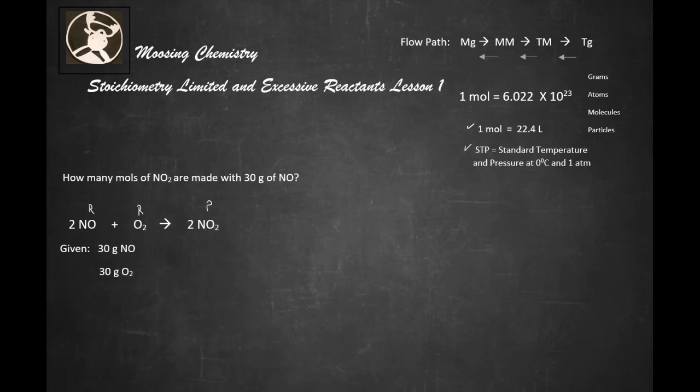We first have to determine which is the limiting reactant, and once we've determined that, we can base our amount of product on only the limiting reactant. Now we're given 30 grams of NO and 30 grams of O2, so what we're going to do is convert 30 grams of NO to grams of 2NO2 and 30 grams of O2 to 2NO2 grams also. The one that makes the less is our limiting reactant, then we can solve our problem.